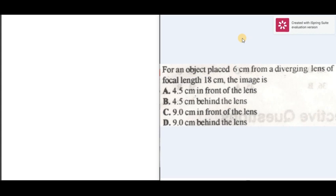In this question, the object distance u is 6cm. For focal length, the focal length of a diverging lens is not real, so it's minus 18 - a minus will be placed in front of that.